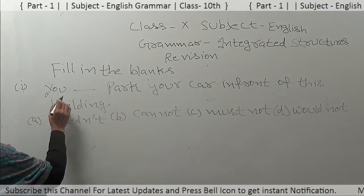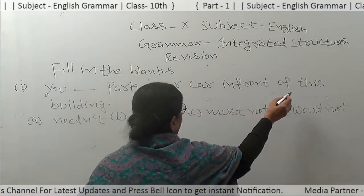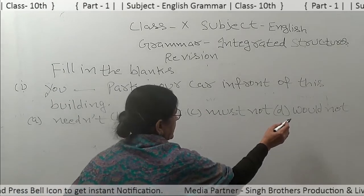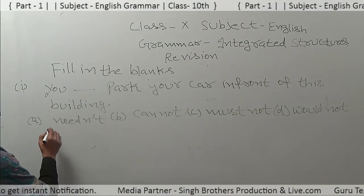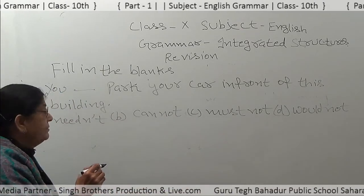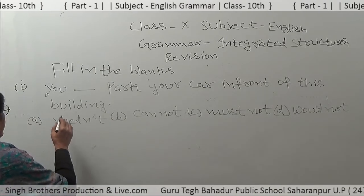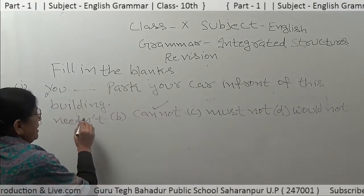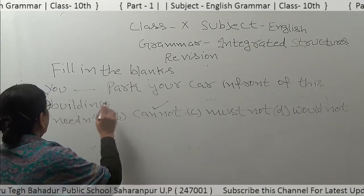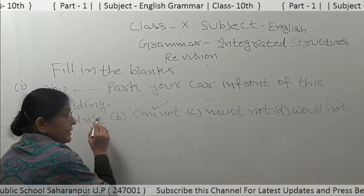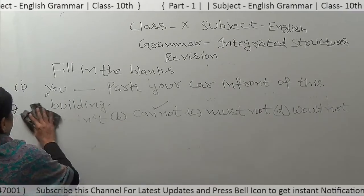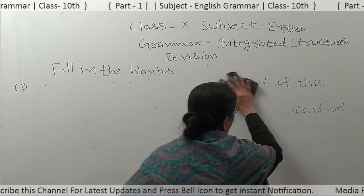The sentence is: you dash park your car in front of this building. Options are need not, cannot, must not, would not. These are the modals — need modal, can modal, must modal, would modal. The correct option is: you cannot park your car in front of this building. Because you are not allowed to park your car here. So you have to fill 'cannot.' This part was of modals.